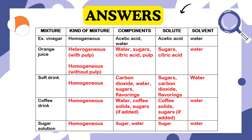Soft drink components: carbon dioxide, water, sugars, flavorings. Solute: sugars, carbon dioxide, flavorings. Solvent: water. Three: coffee drink — kind of mixture: homogeneous. Components: water, coffee solids, sugars if added. Solute: coffee solids, sugars if added. Solvent: water. Four: sugar solution — kind of mixture: homogeneous. Components: sugar, water. Solute: sugar. Solvent: water.